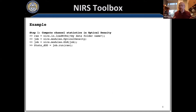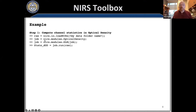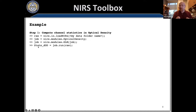The first step for image reconstruction: do all pre-processing up through optical density, then compute stats in optical density space. Load your Nirx data — already registered — convert to optical density, run a stats model like a GLM, apply motion correction such as tDDR, PCA, or other filters. At the end you want the stats variable in optical density, which feeds into the image reconstruction model.